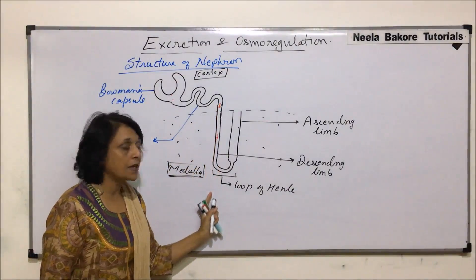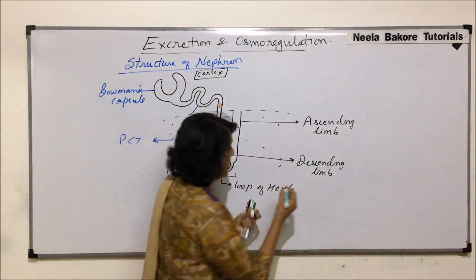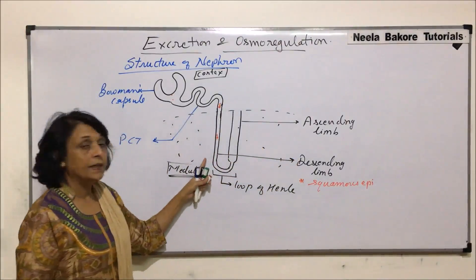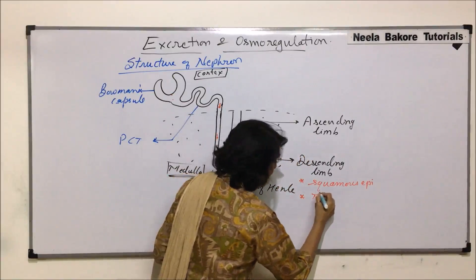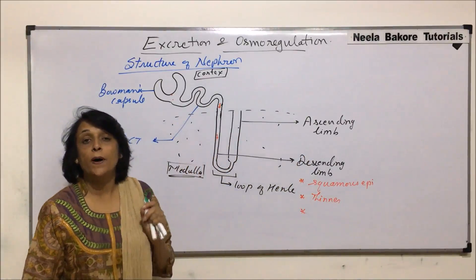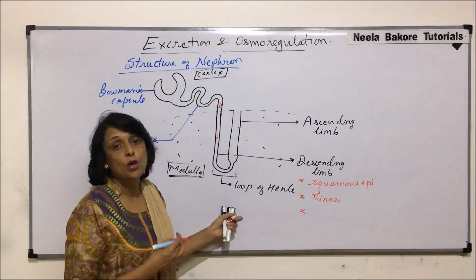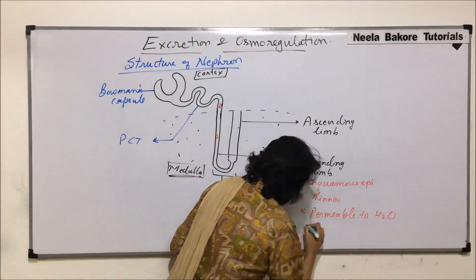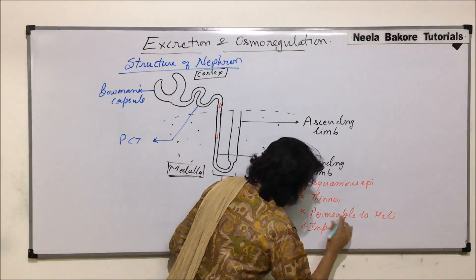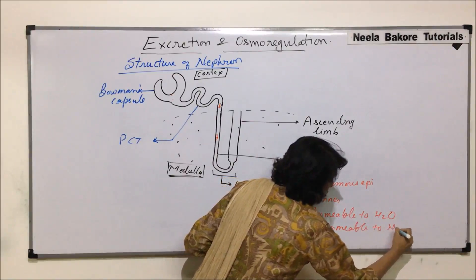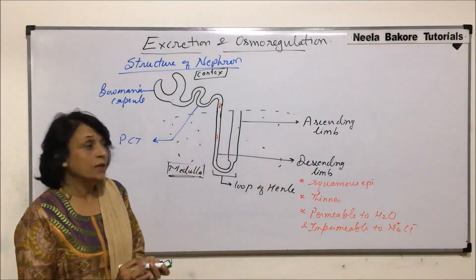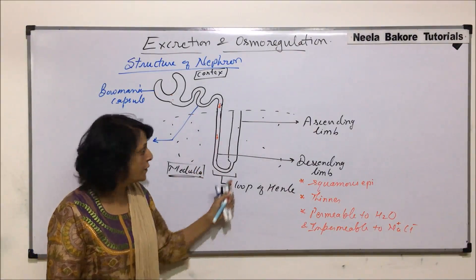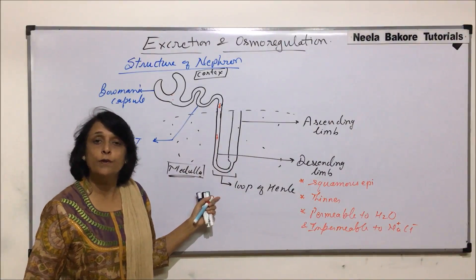Coming to the loop of Henley: the arm coming down is the descending limb. The descending limb is lined with squamous epithelium. It is thinner compared to the ascending limb, and its wall is permeable to water but impermeable to sodium and chloride ions. So it is permeable to water and impermeable to sodium chloride. This speciality will help in making the urine concentration different, which we will see later when we talk about the process of urine formation.